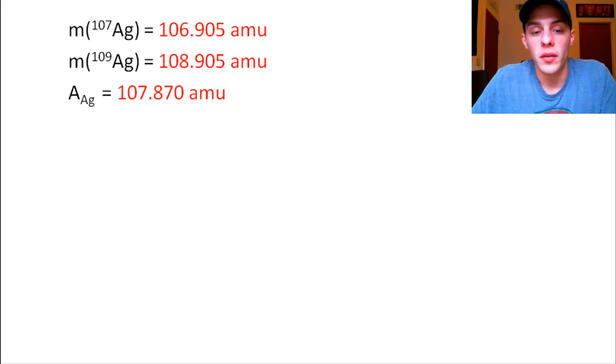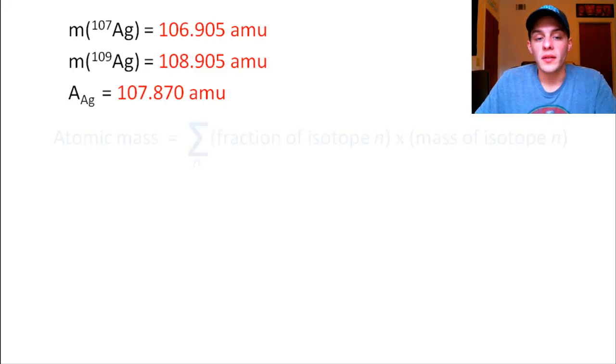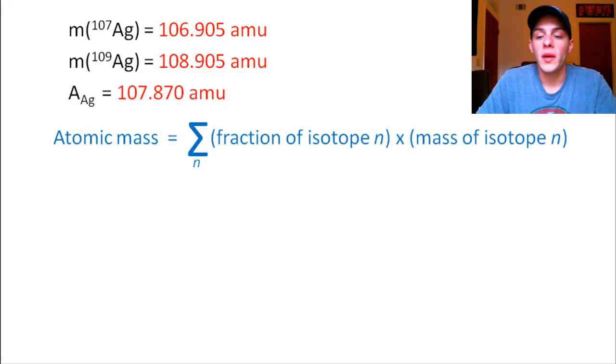So the main formula that we're going to use here, one of the main formulas that we're going to use here is for the atomic mass of an element. So remember, the atomic mass of an element, the way that we get that is we take a summation, that's what the sigma means, it's a summation of n isotopes. So n is the number of naturally occurring isotopes that the element has.